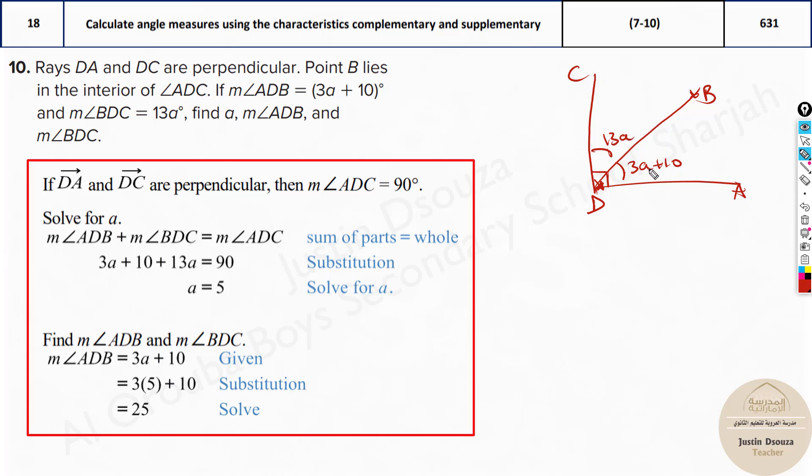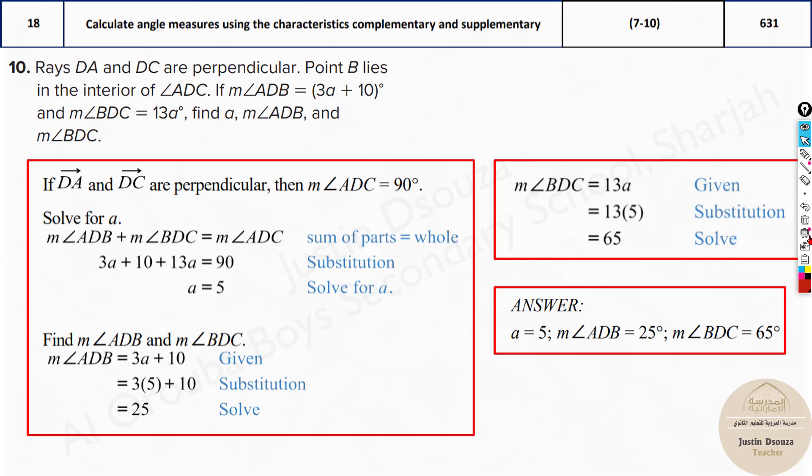So when you add these two angles, what do you get? You get 90 degrees. So it's 3a + 10 plus 13a equals 90. You solve for a. a is 5. And then they have asked you to solve for the measure of ADB and BDC. So substitute a back over here in ADB and BDC, and you will then get the answer. So that's the measures, 25 and 65. And there you go, this is the answer.